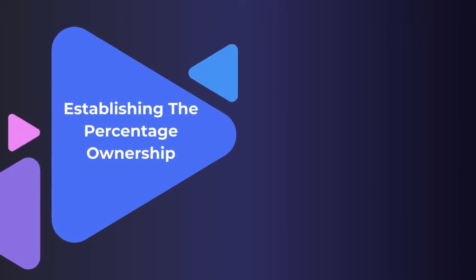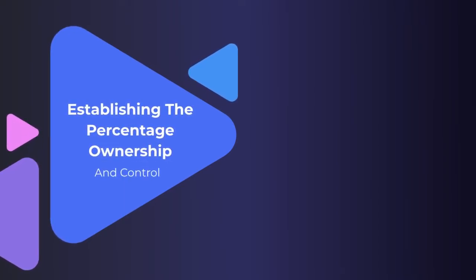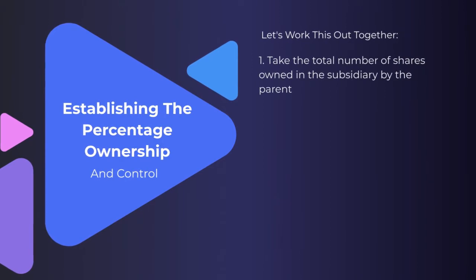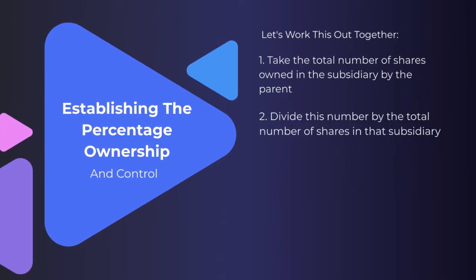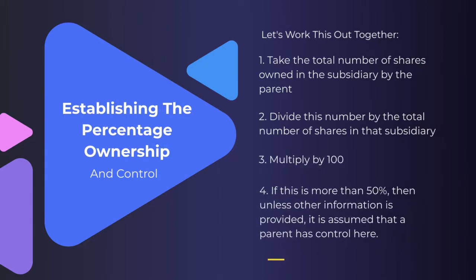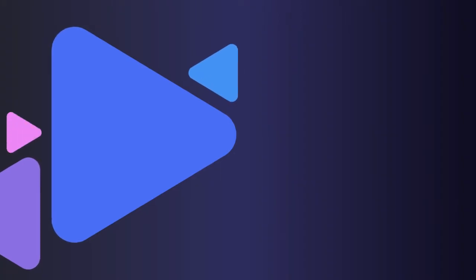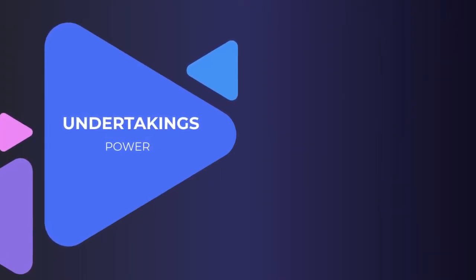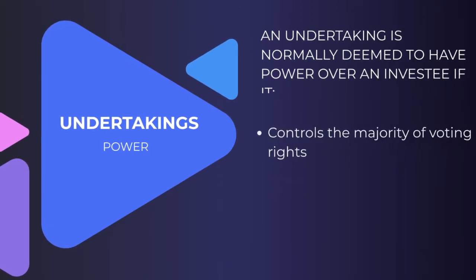It's very important that we understand how to establish the percentage ownership and control. We take the total number of shares owned in the subsidiary by the parent, divide by the total number of shares in that subsidiary, and multiply by 100. If this is more than 50%, then unless any other information is provided, it is assumed that the parent has control.